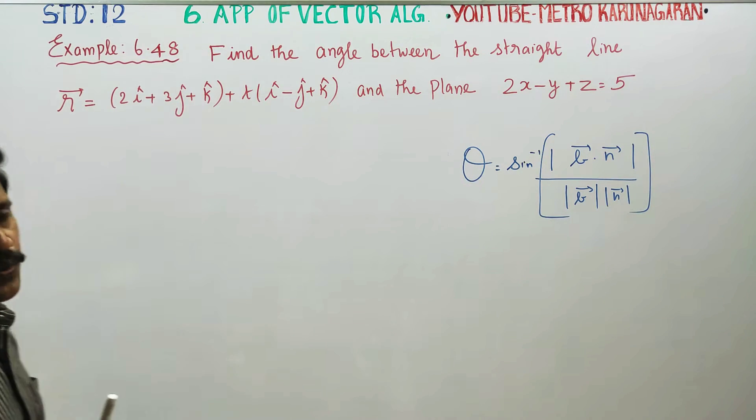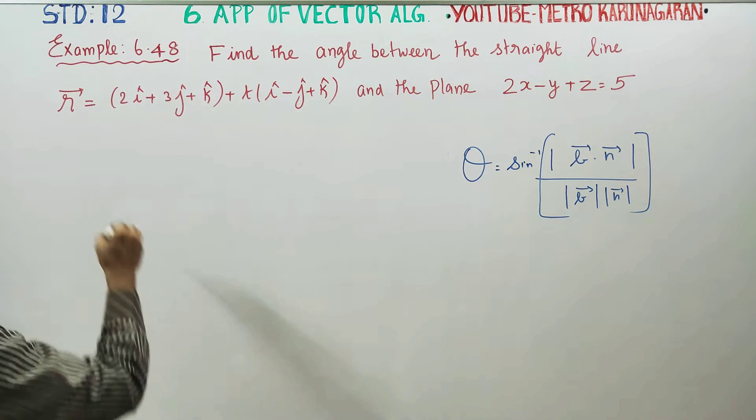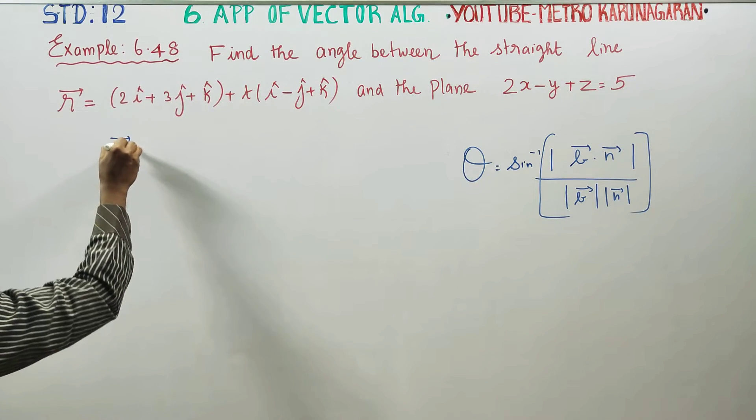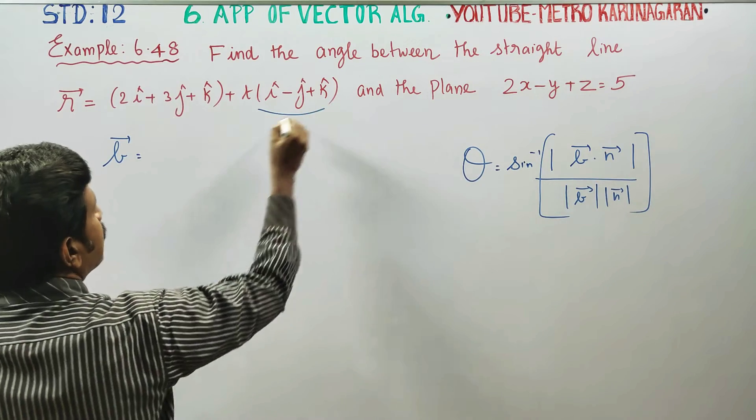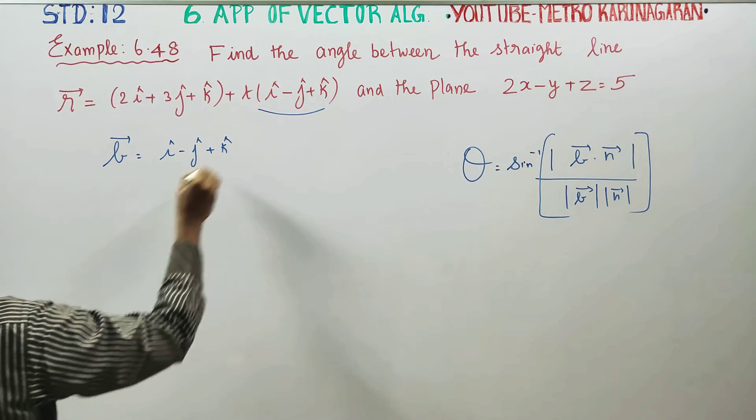What is b vector and what is n vector? b vector is parallel to the line: i vector minus j vector plus k vector.